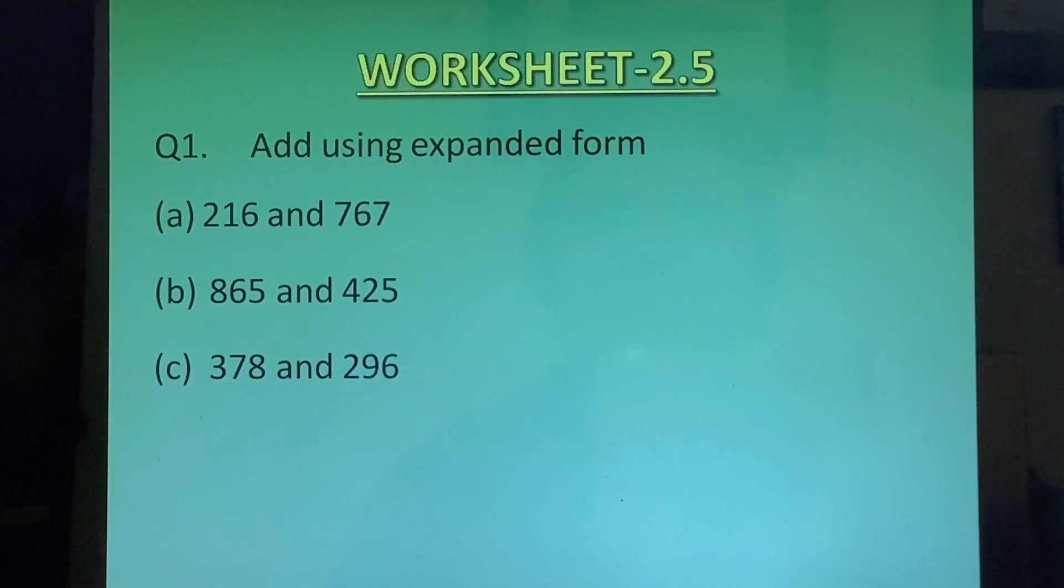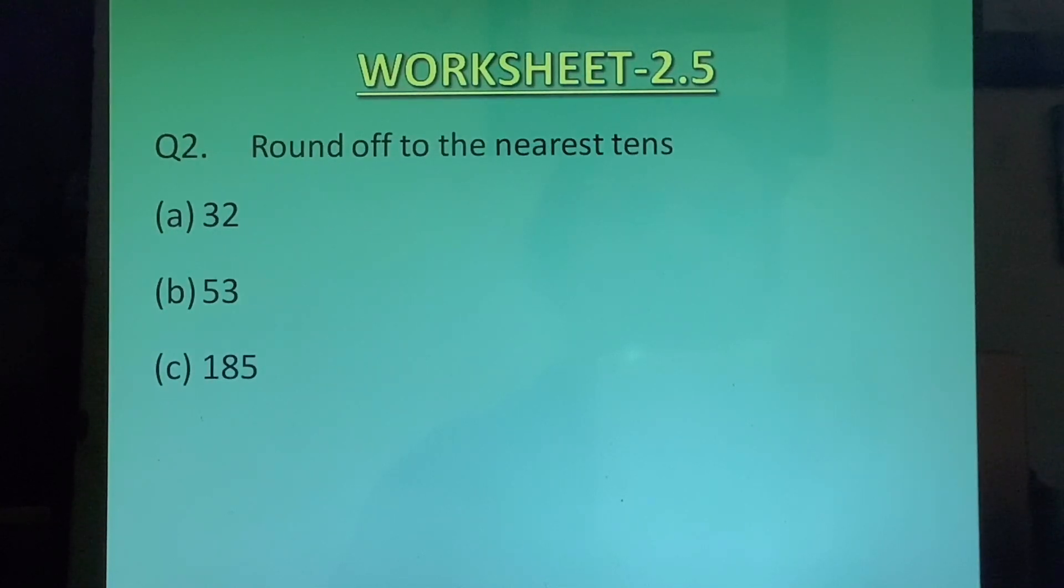Question 1 Add using expanded form A. 216 and 767 B. 865 and 425 C. 378 and 296. Question 2 Round off to the nearest tens A. 32 B. 53 C. 185